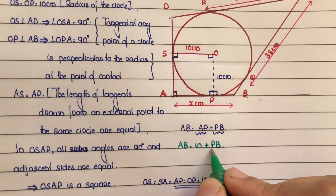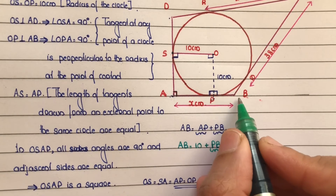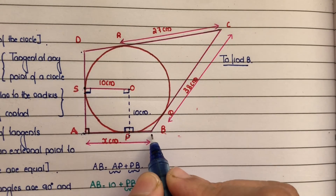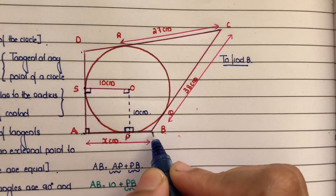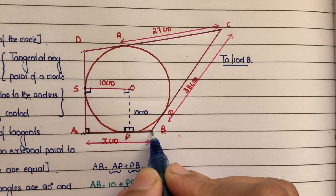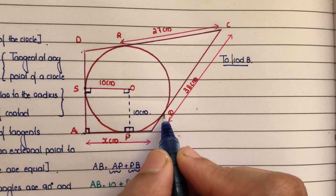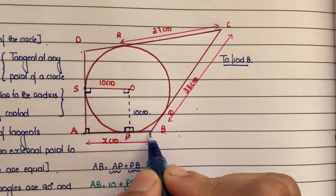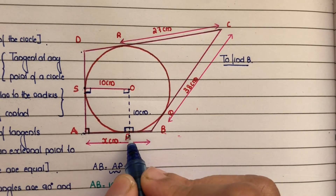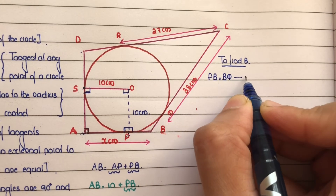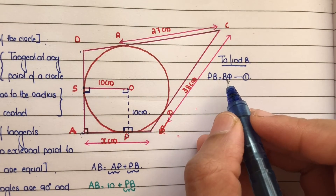The next aim is to find PB. Point B is an external point to the circle. BQ and BP are two tangents drawn from point B to the same circle. So as per the theorem, BQ equals BP, or PB equals BQ. Mark this as equation number 1.